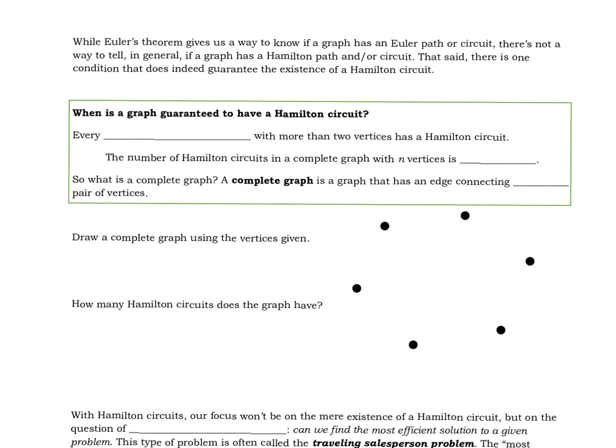There's no such thing for Hamilton paths and circuits. There's no way to tell for a graph in general - it does take a trial and error method. However, there is one particular type of graph that we know has a Hamilton circuit every single time, and that graph is called a complete graph.